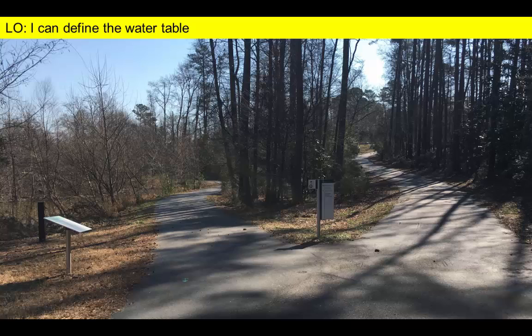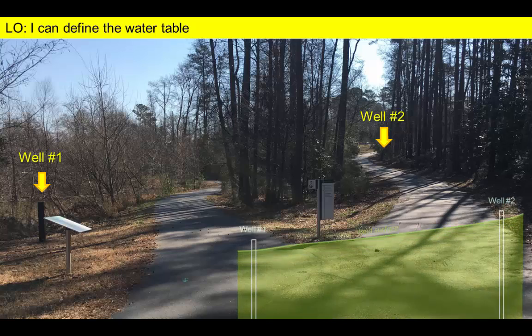Let's try and find the elevation of the water table in some nearby wells. This hillside slopes down to a small pond that you can see through the trees. There are two wells here — one is visible and the other is hidden in the shadows further up the slope. The relative positions of the wells are illustrated on this cross section.